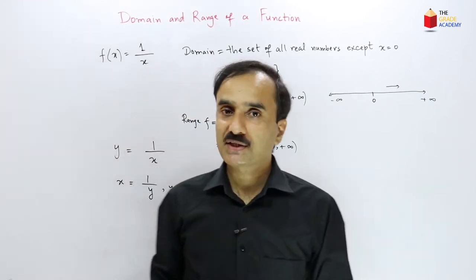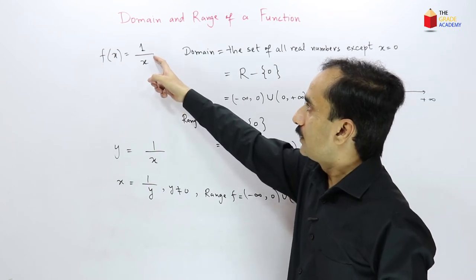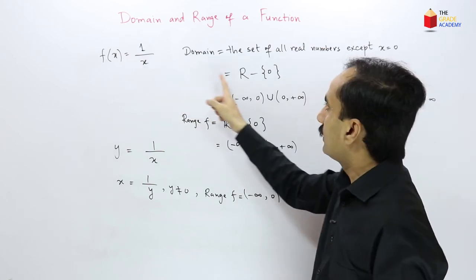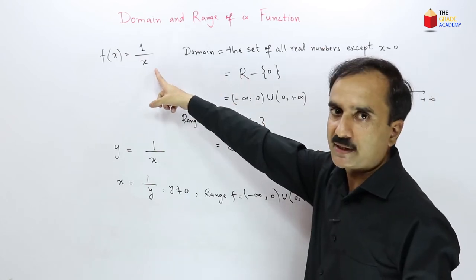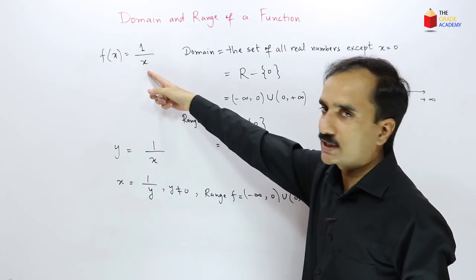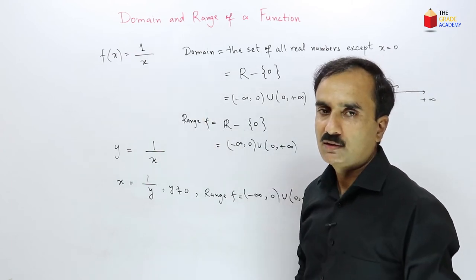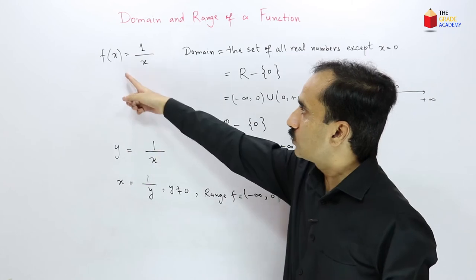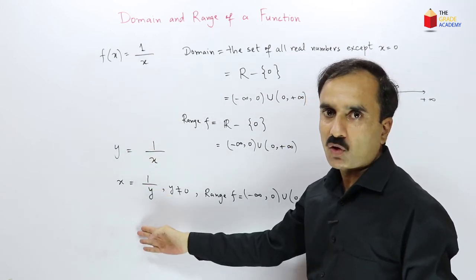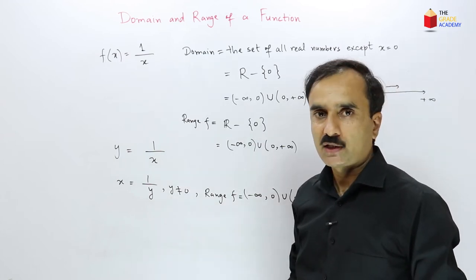Whenever we have a rational function — a fraction — we must exclude from the domain the values that make the denominator zero. The remaining real numbers satisfy the function and belong to its domain.